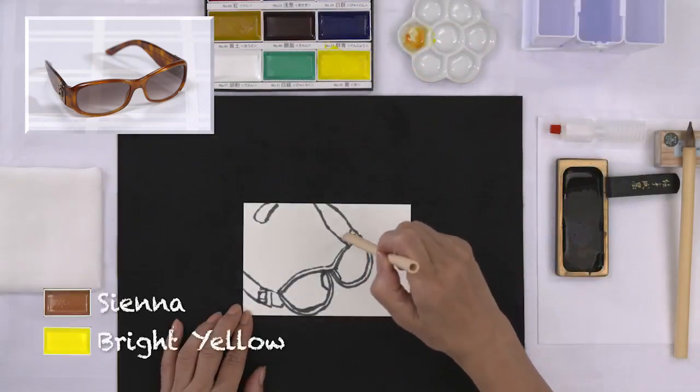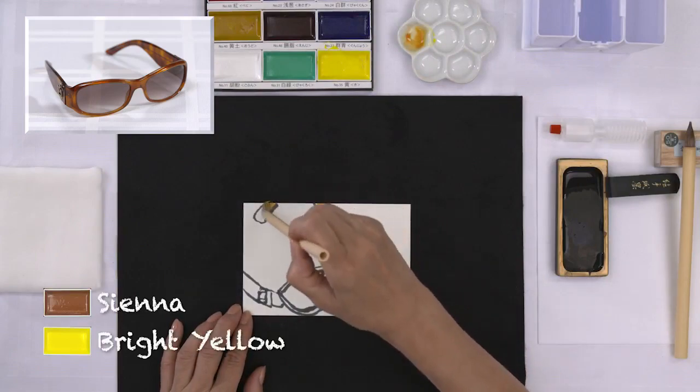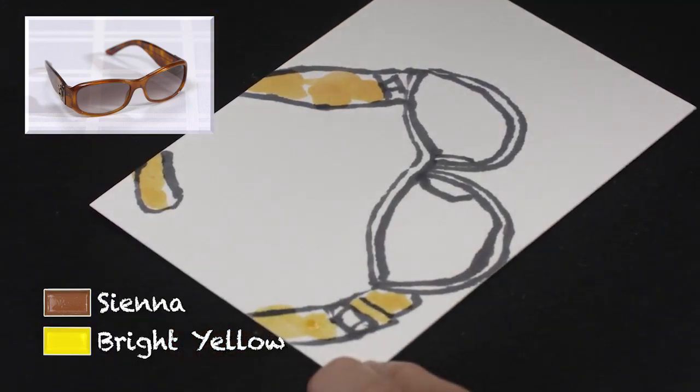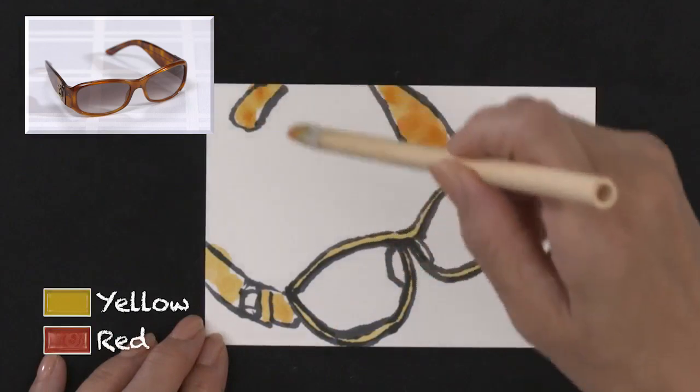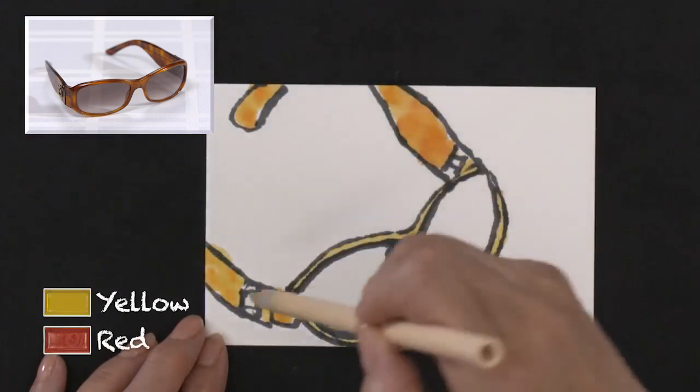With the coloring brush, mix a bit of sienna with bright yellow and color the temples and the frames. Again with the coloring brush, mix yellow into red and color the frames in layers.